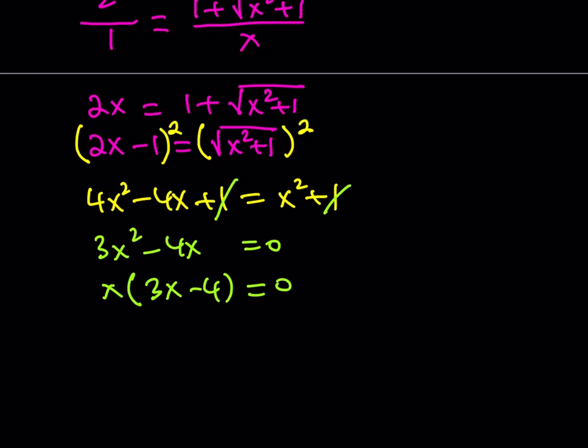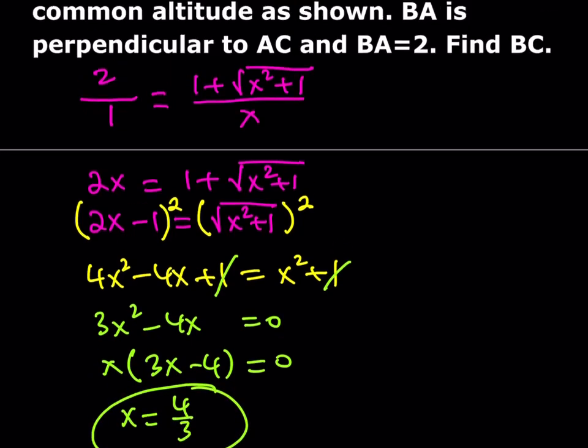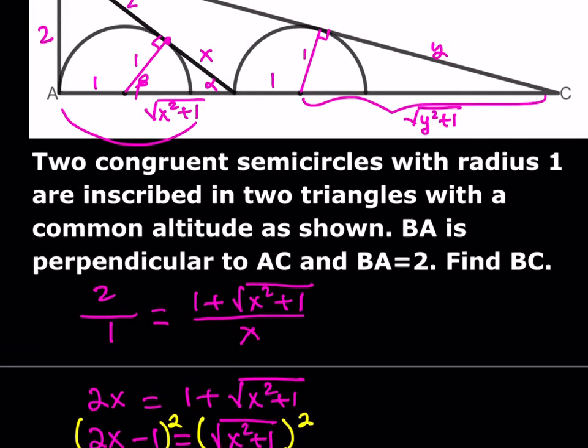Obviously x can't be 0, so 3x minus 4 equals 0, which means x is equal to 4/3. Now we found x. We're going to find y.